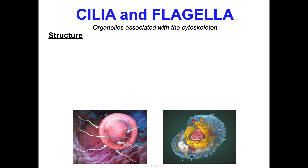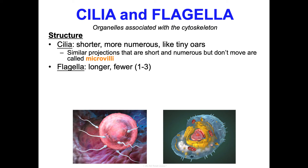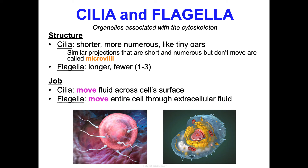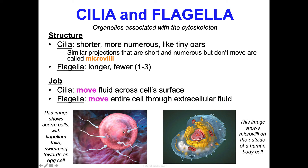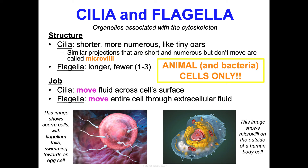Cilia and flagella are organelles associated with the cytoskeleton. Cilia are shorter and more numerous — like tiny oars. Flagella are longer and fewer, either one or up to three on some cells. Cilia move fluid across the cell surface — for example, cilia in your throat help move fluids down. Flagella move the entire cell through extracellular fluid, like sperm cells using their single flagellum as a tail to swim toward an egg. These are found in animal and bacteria cells. Microvilli look similar to cilia but do not move.